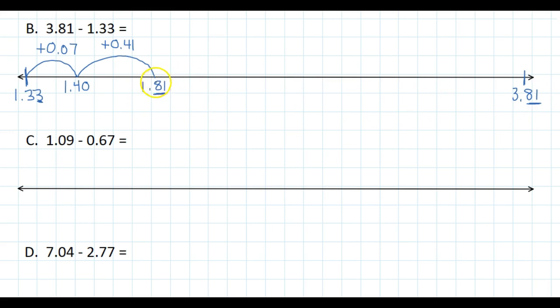Now my decimals match up - I've got 81 here and I've got 81 here. So now I can just add on whole numbers. What do I add to 1 in order to get to 3? I just add 2. So I can have a big hop and I add on 2.00, which gives me 3.81.